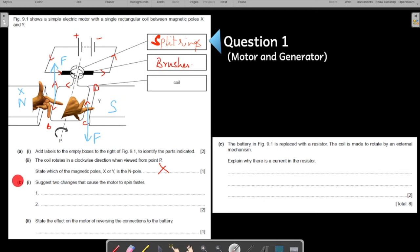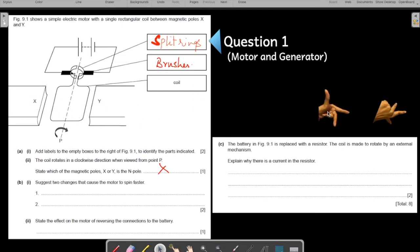So coming on to the next part. Suggest two changes that cause the motor to spin faster. How can you increase the spinning of the motor? Now these are something that we have already discussed when we were talking about motors. If you have not gone through the chapter on motors, we have a video on motors. Please go through it.